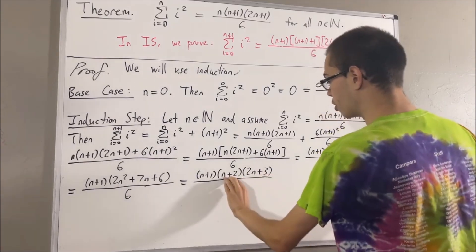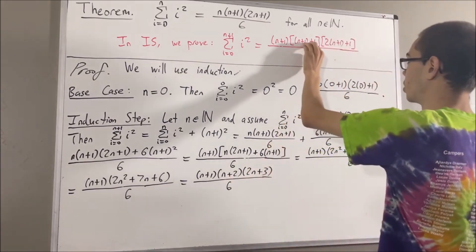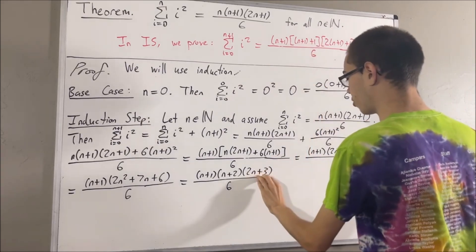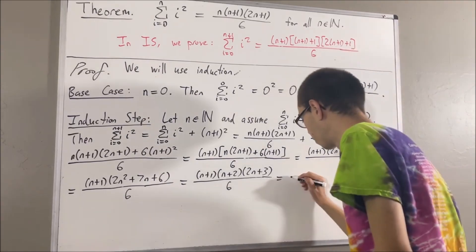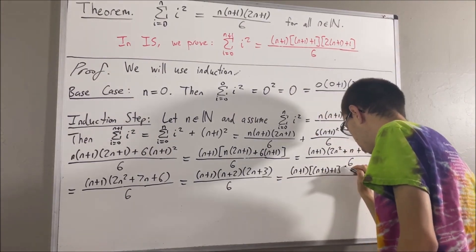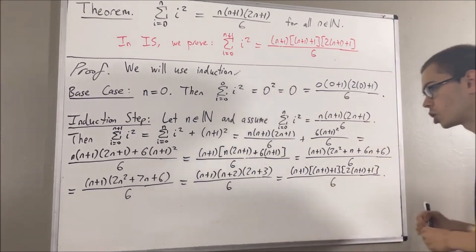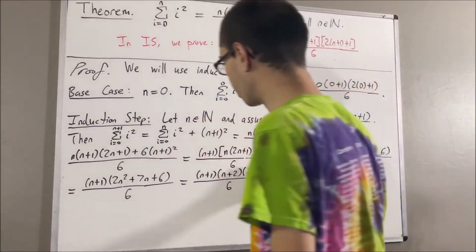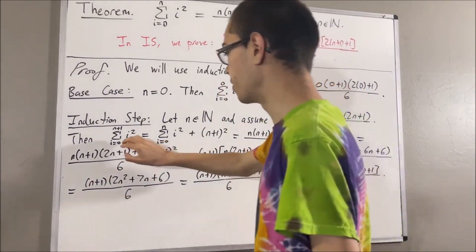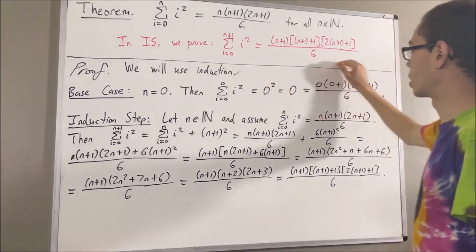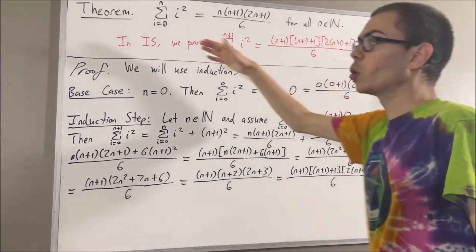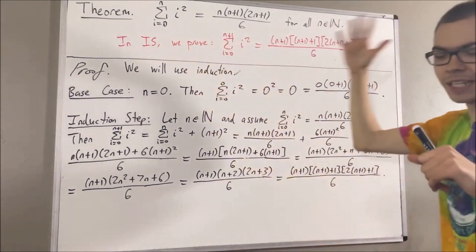Then, we see that n plus 2 is precisely n plus 1 plus 1, and 2n plus 3 is precisely 2 times n plus 1 plus 1. So, through this chain of equalities, we have shown that this is equal to this, which is precisely what we wanted to show. That was the whole goal of the induction step, so this completes the induction step.